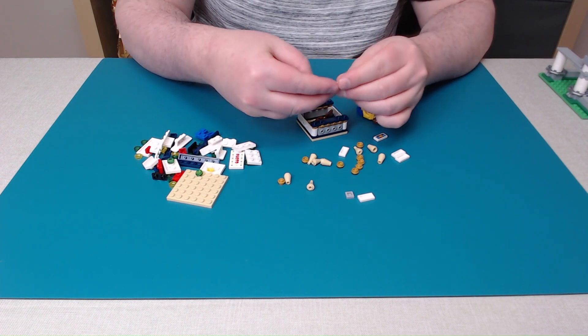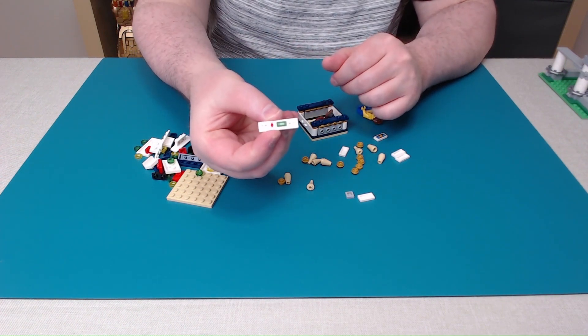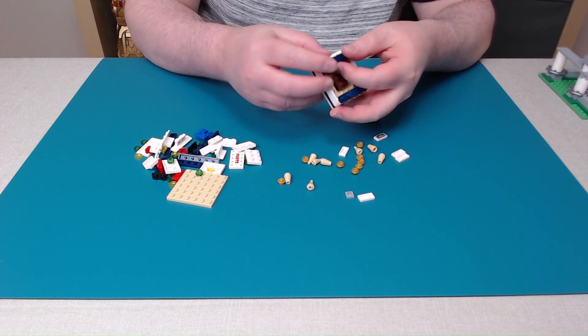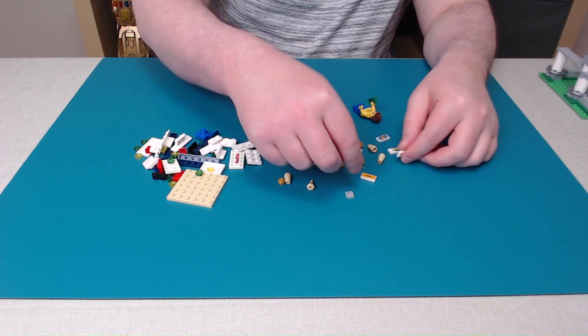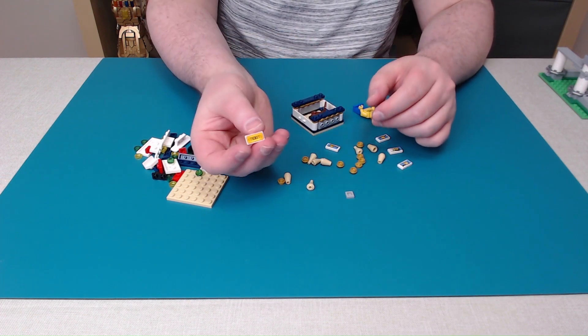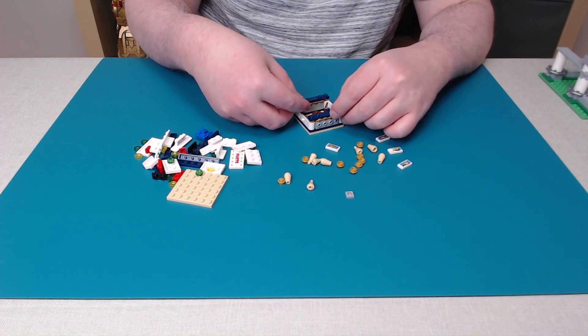Now, this one sticker just has money on it. It goes on the front. And out of all the stickers, there's one printed brick which has a ticket symbol on it. Put that on the corner here.